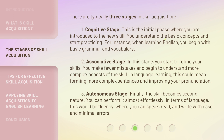Stage 2: the Associative Stage. In this stage, you start to refine your skills. You make fewer mistakes and begin to understand more complex aspects of the skill. In language learning, this could mean forming more complex sentences and improving your pronunciation.